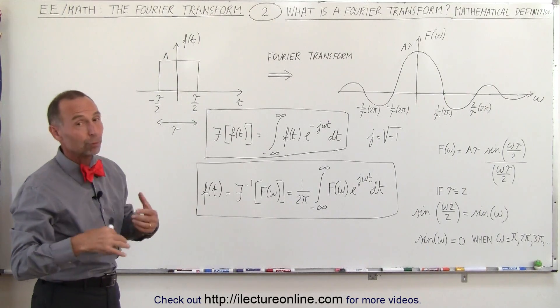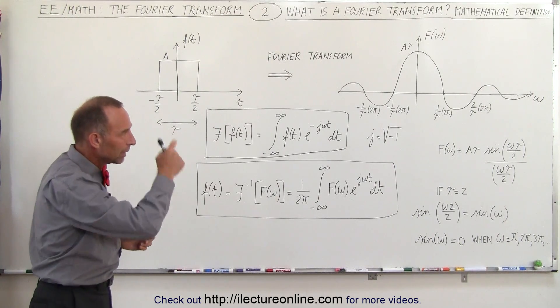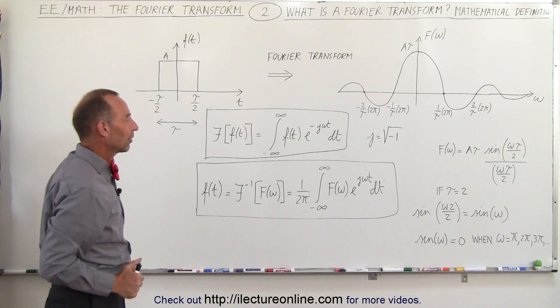So of course there would be 2 pi radians per second. That would be the frequency of the particular point where the function goes through the horizontal axis.